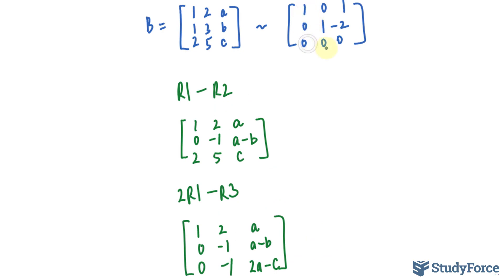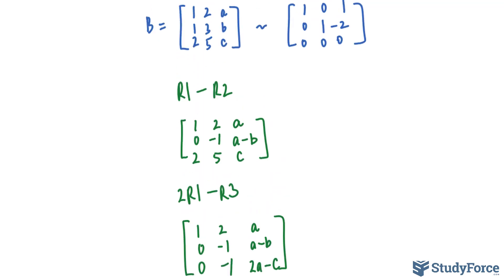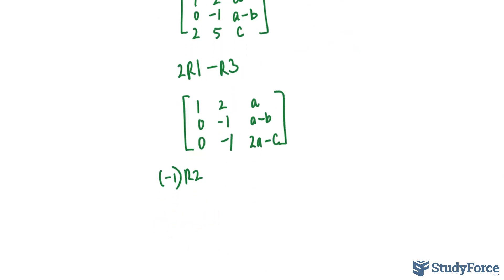So it's starting to look like this one. Okay, now I want to make sure that this element is positive 1, as you can see over here. So I'll multiply all of row 2 by -1. And this gives me the following: 0, positive 1, B minus A. And that remains unchanged.